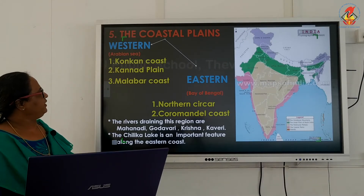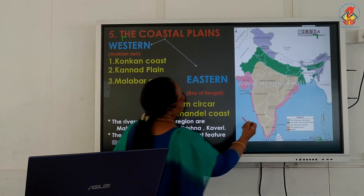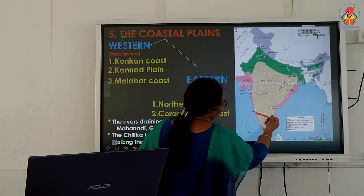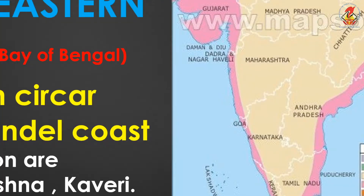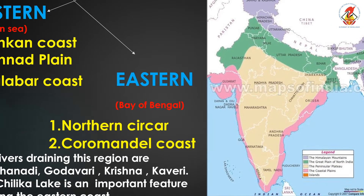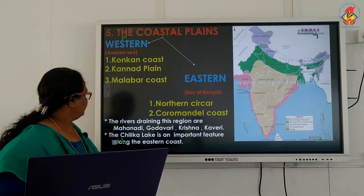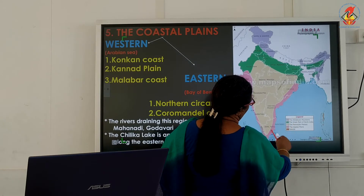The Konkan coast runs from Mumbai to Goa, the Karnat (Kannada) coast from Goa to the Karnataka region, and the Malabar coast from there to the southern tip. The eastern coastal plain is divided into the Northern Sarkar coast and the Coromandel coast.